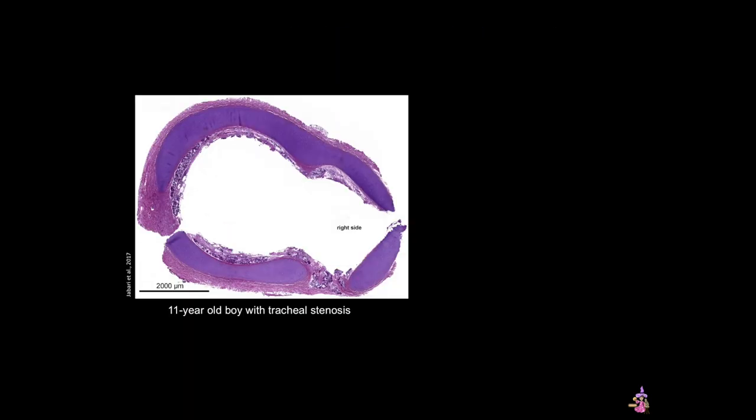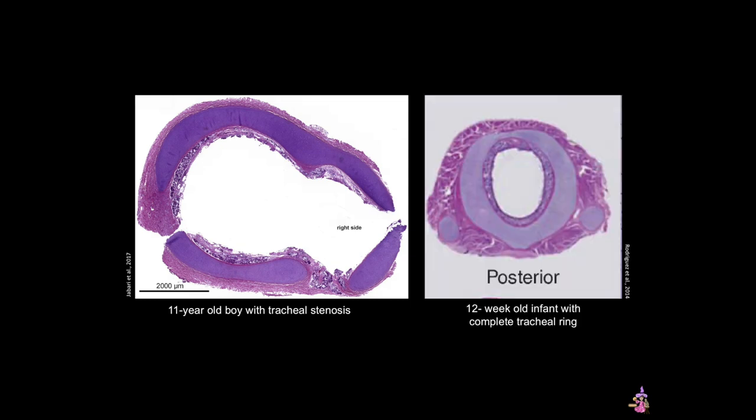Histologically, here are two examples of complete tracheal rings: the first in an 11-year-old boy and another from a 12-week-old baby presenting in respiratory distress. You can see that the cartilage looks pretty normal in both cases. Usually this condition affects the trachea, but it can affect the large bronchi as well, and it is usually able to be treated surgically.